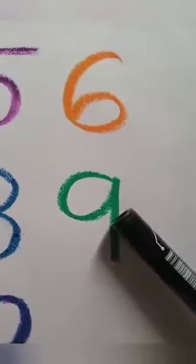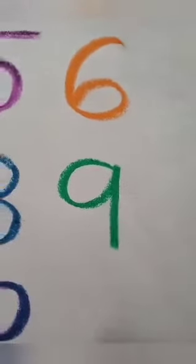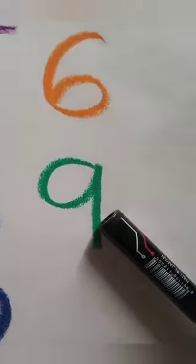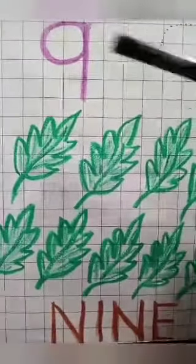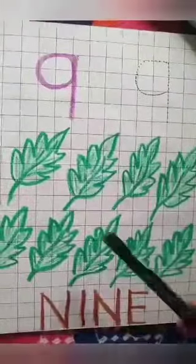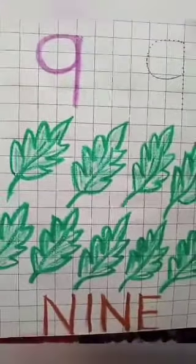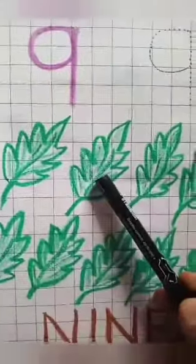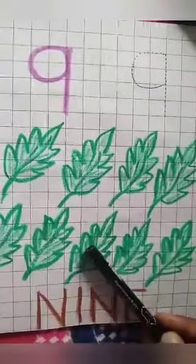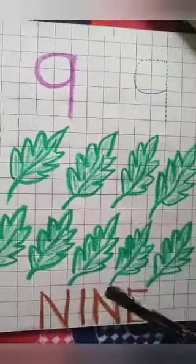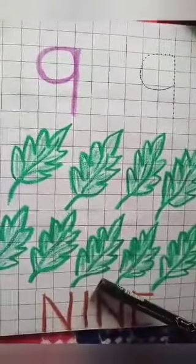This is all about number 8. Now kids, let's learn how to count number 9 and how to write number 9 in your math notebook. Identify this number — which number is this? This is number 9. Now let's count some objects related to number 9. How many leaves are there? Count with me: 1, 2, 3, 4, 5, 6, 7, 8, 9 — 9 leaves!